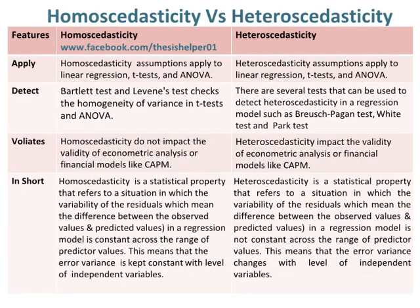In both homoscedasticity and heteroscedasticity, assumptions apply to linear regression, T-tests, and ANOVA. Bartlett's test and Levene's test check the homogeneity of variance in T-tests and ANOVA.